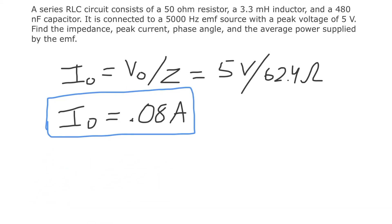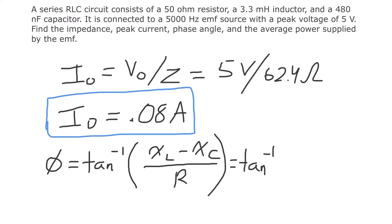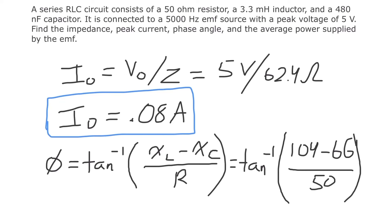Next we need the phase angle. The formula for the phase angle φ is the inverse tangent (arc tangent) of (XL minus XC) divided by R. We already have all those values: XL was 104, XC was 66, and R is 50 ohms. Plugging those in gives a phase angle of 36.8 degrees.